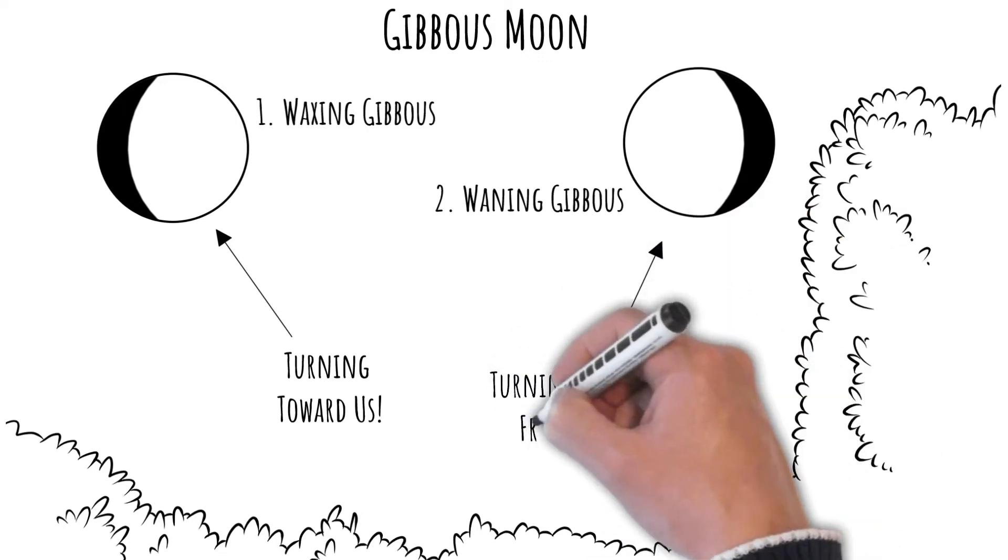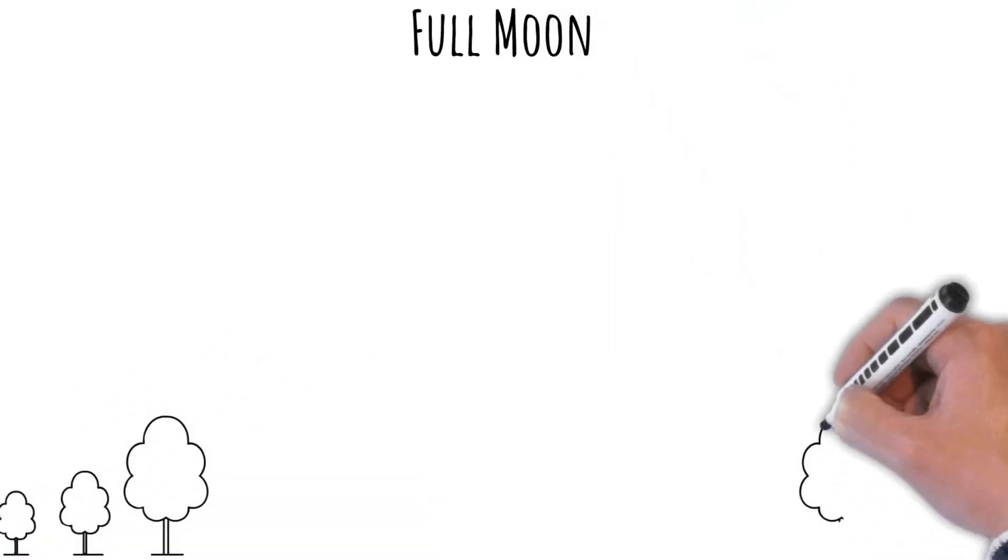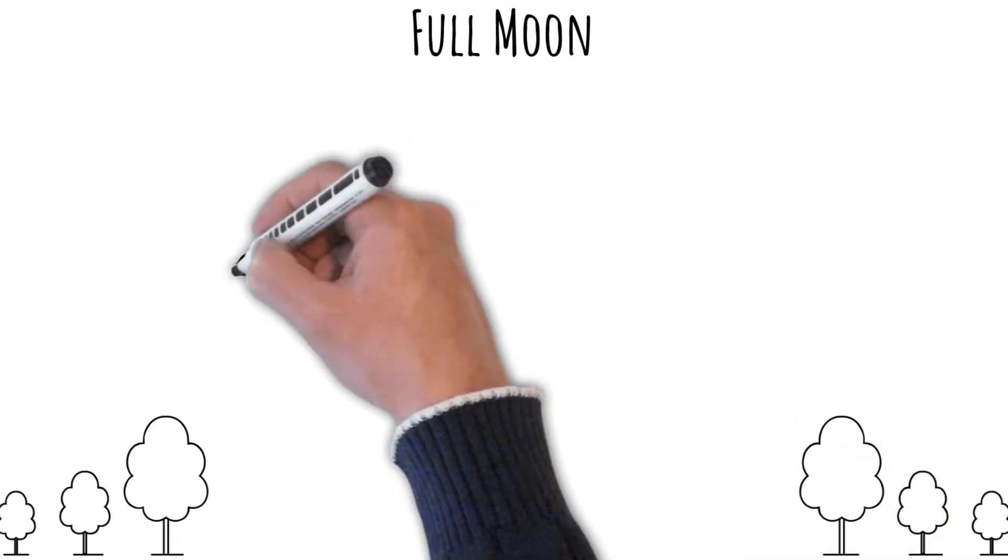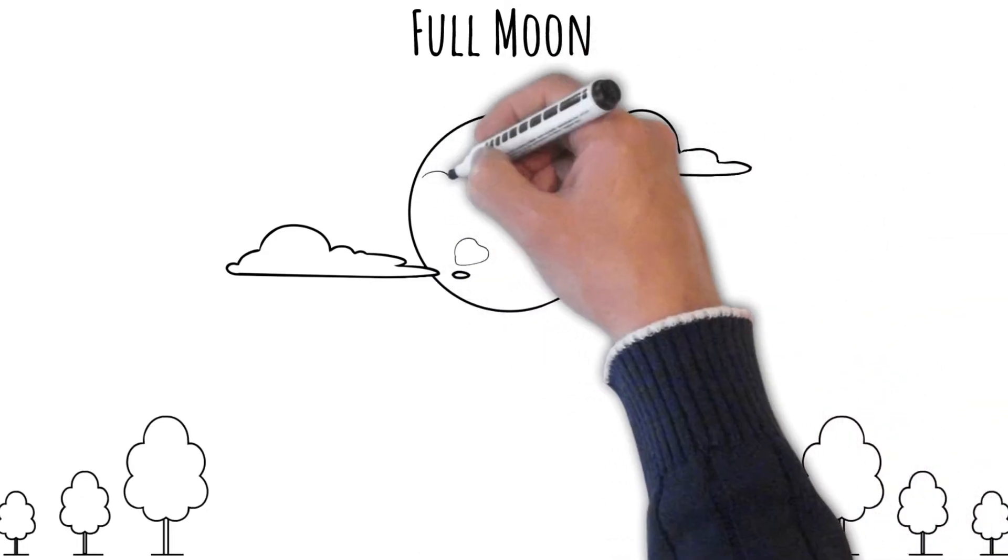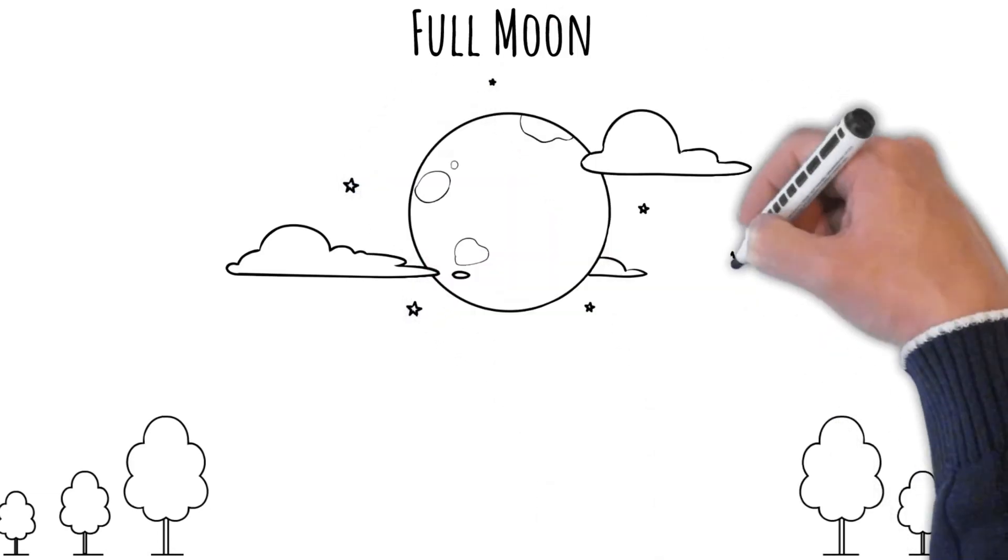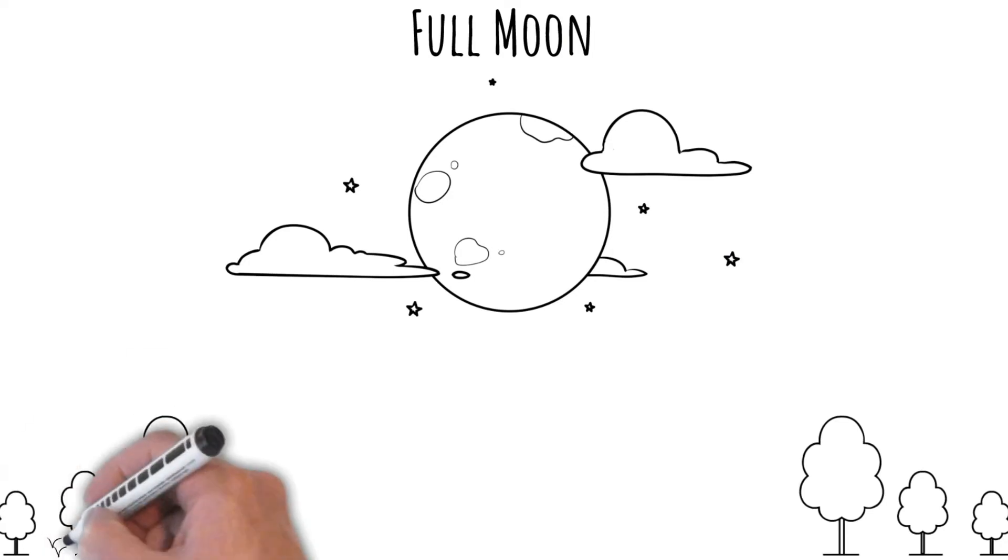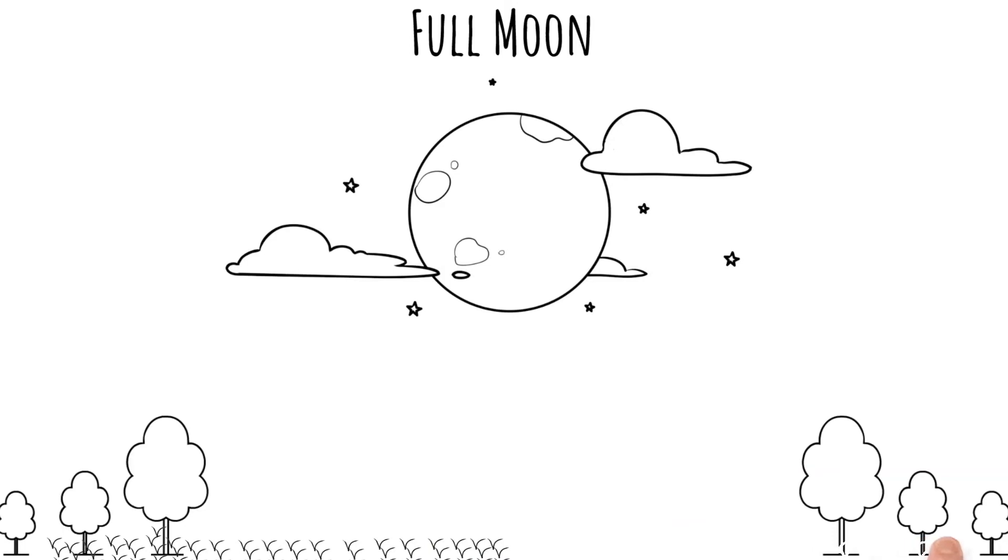And our last moon cycle is the full moon. This is when we see the full illuminated day side of the moon. The moon is opposite the sun as viewed from Earth, revealing the moon's day side. A full moon rises around sunset and sets around sunrise. The moon will appear full for a couple of days before it moves into the waning gibbous, which is what we just talked about.